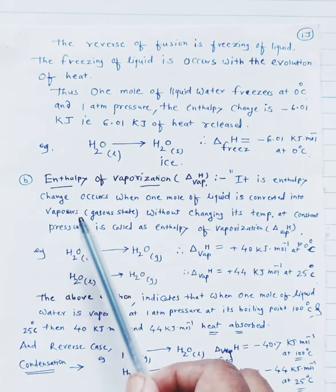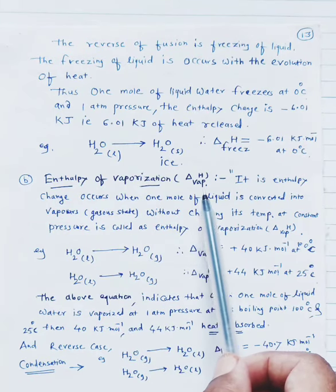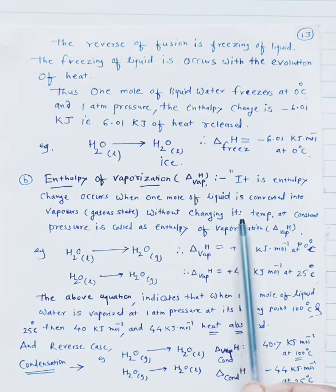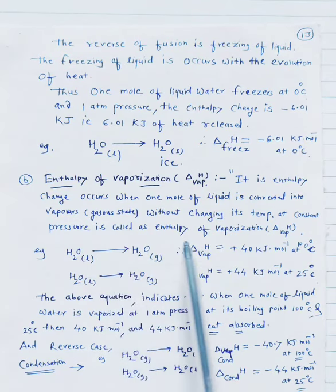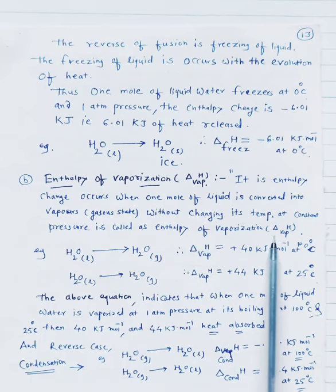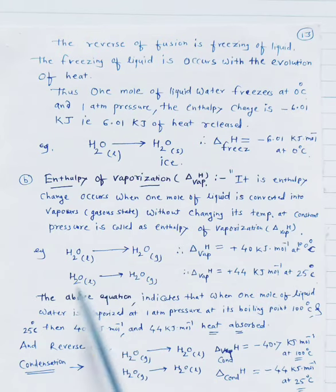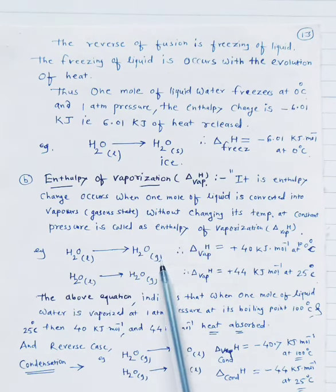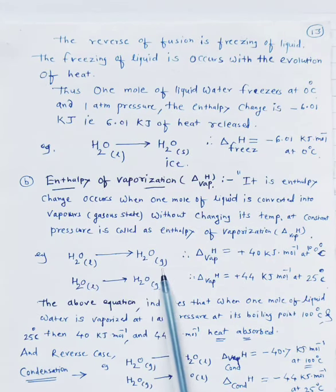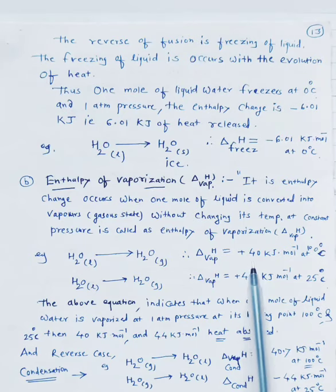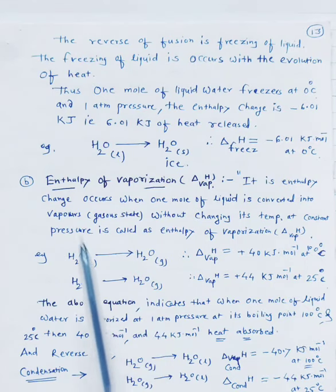The next point is enthalpy of vaporization, symbol delta-vap H. The definition is: the enthalpy change that occurs when one mole of liquid is converted into vapor, that is the gas state, without changing its temperature at constant pressure, is called enthalpy of vaporization. For water, the liquid H2O converts into H2O gas state. Delta-vap H is equal to plus 40 kJ per mole.